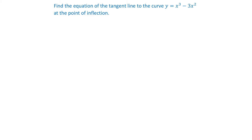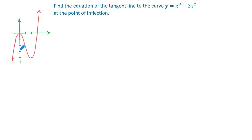This is a cubic function and I will start by sketching the graph. The graph is a smooth curve that falls to the left and rises to the right. This function has only one point of inflection, which is the point where the function changes concavity. To the left of the point of inflection the graph is concave down, but to the right the graph is concave up.